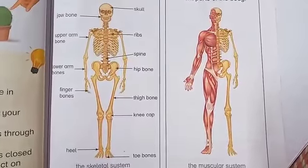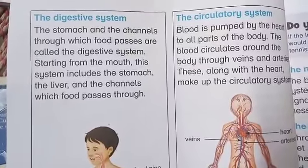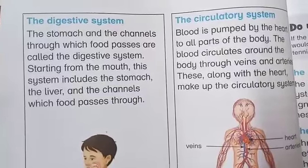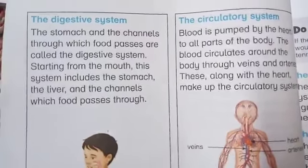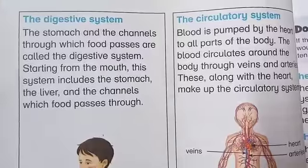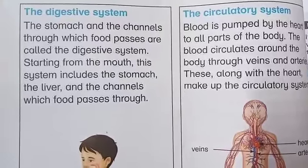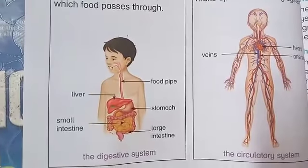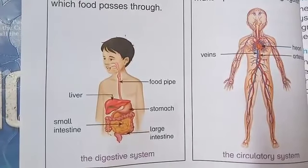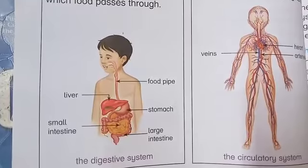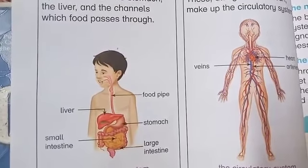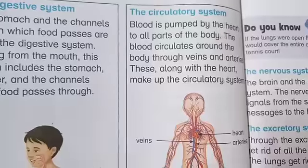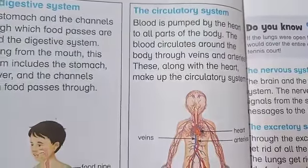The digestive system helps to digest or break down food and separate nutrients from the food that are used by the body to get energy. The digestive system is made up of the food pipe, liver, stomach, large intestine, small intestine, and other organs — all these organs combine to form the digestive system.